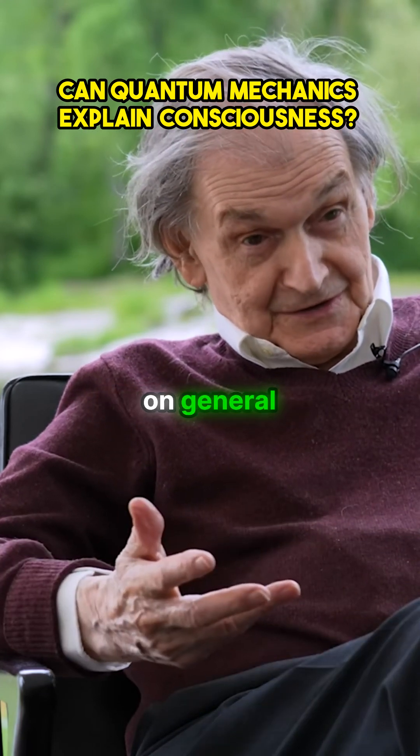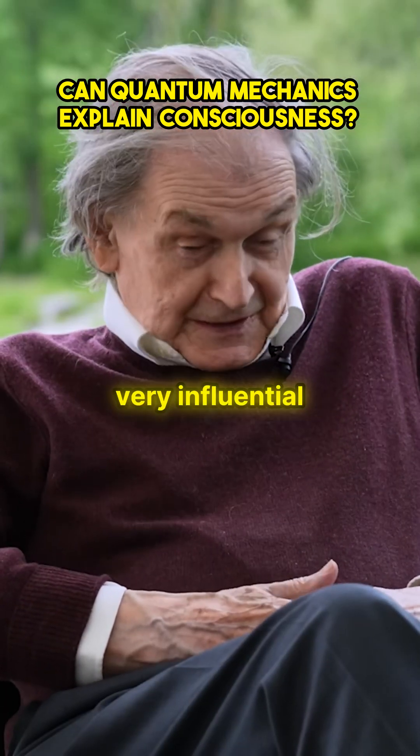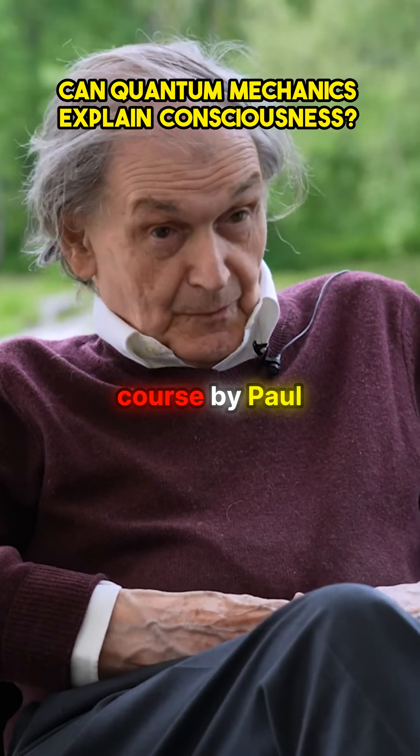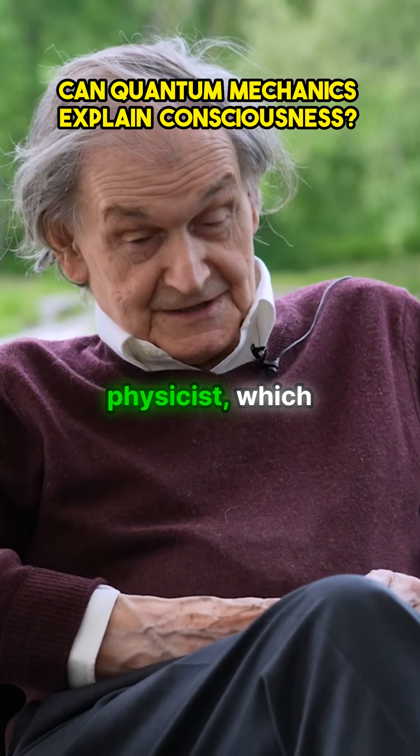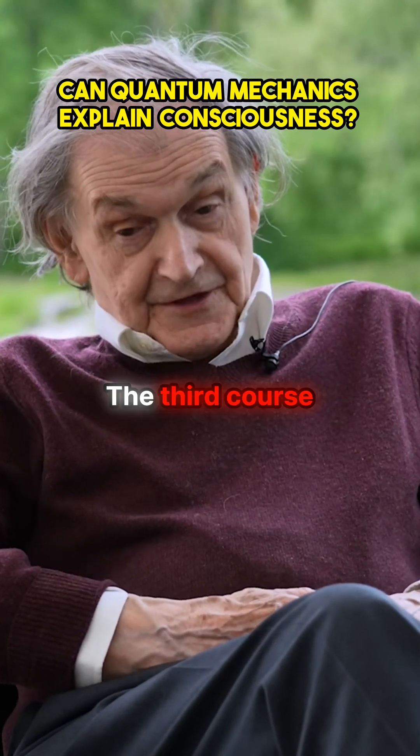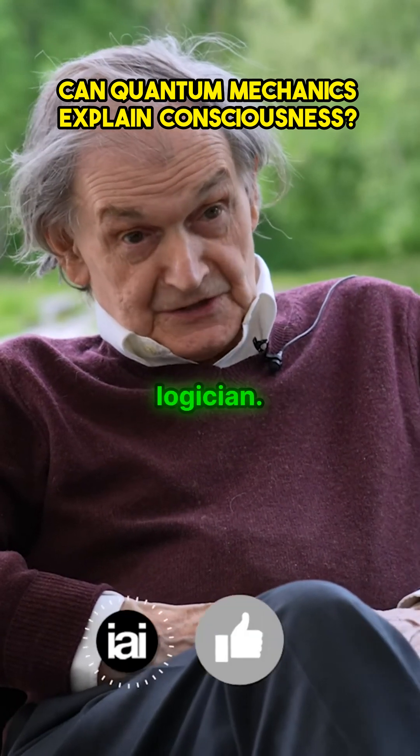One was a course by Bondi on general relativity, which was very influential on what I subsequently did. Another was a course by Paul Dirac, the great physicist, which also was extremely influential. The third course was by a man called Steen, who was a mathematical logician.